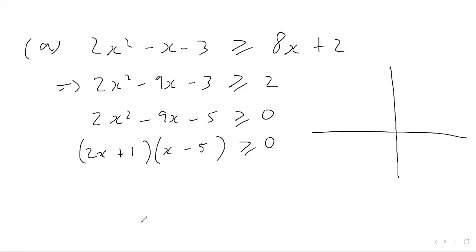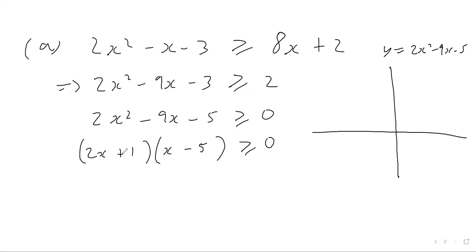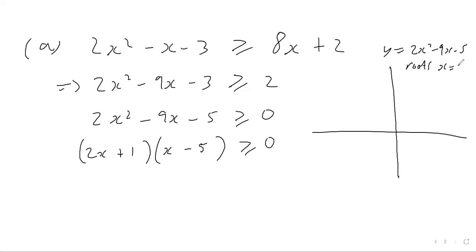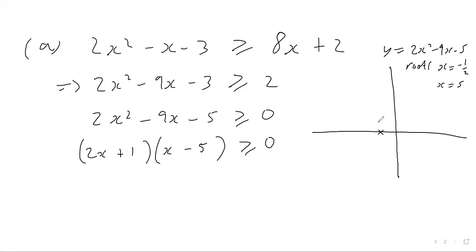At this point I'd recommend sketching the graph y equals 2x squared minus 9x minus 5. We can sketch it because we now know the linear factors. The roots, by solving each factor equal to zero, are at x equals negative one half and x equals positive 5.